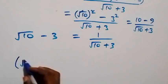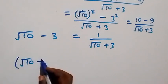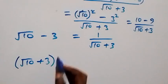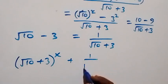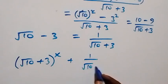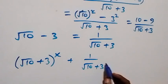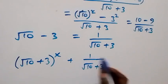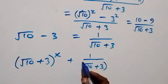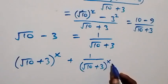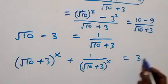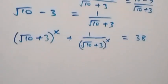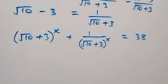And we have now: (root 10 plus 3) raised to power x, plus 1 over (root 10 plus 3) raised to power x. Here, 1 raised to power x is still 1, so this will be raised to power x, then equals to 38.